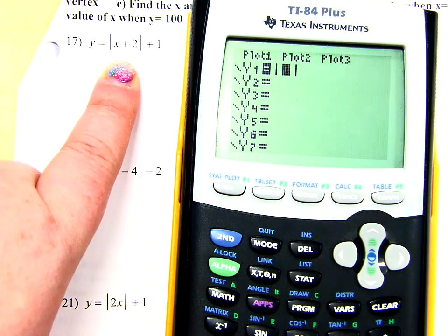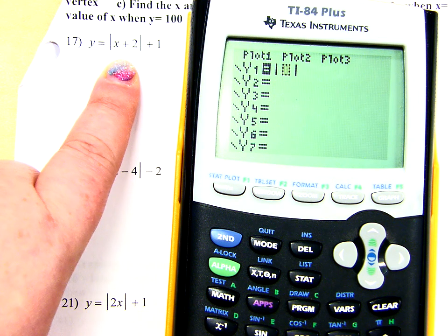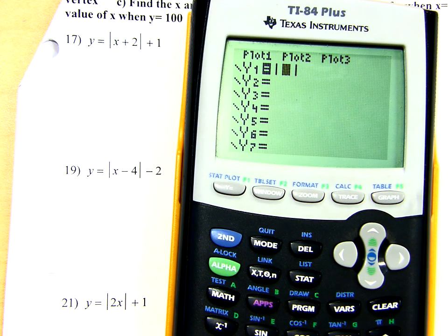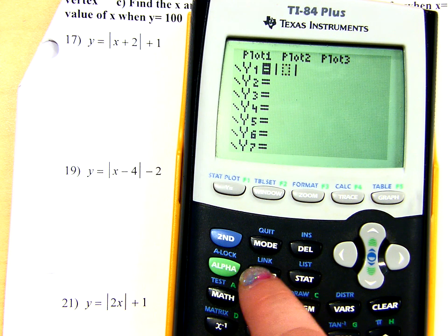On the black calculators, it might look a little bit different. It might say ABS with the parentheses. It's the same thing. Whatever you're putting in the parentheses on the black calculators, that's what's going to go in your absolute value bars. In the yellow, they have the actual bars. So let's just type in X plus 2.